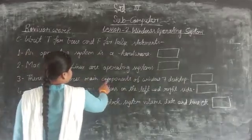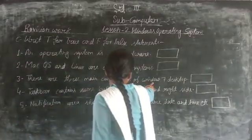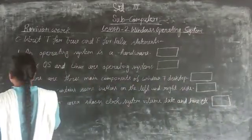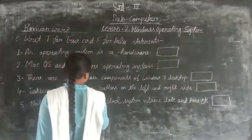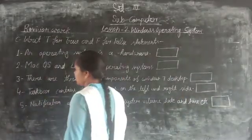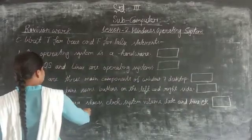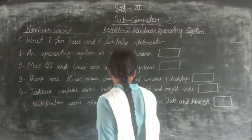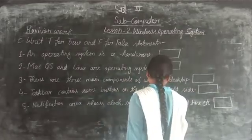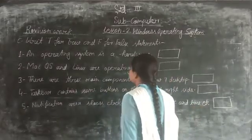Third, there are three main components of Windows 7 desktop. Fourth, taskbar contains some buttons on the left and right side. Fifth, notification area shows clock, system volume, date and time, etc.